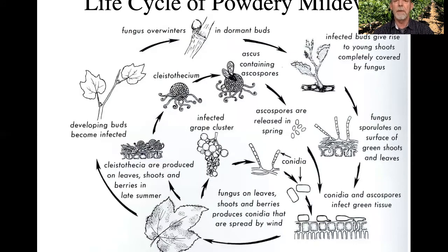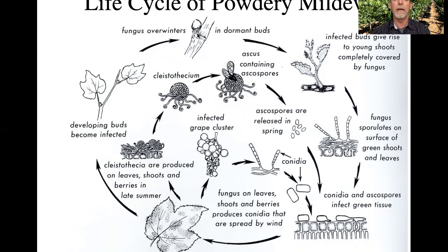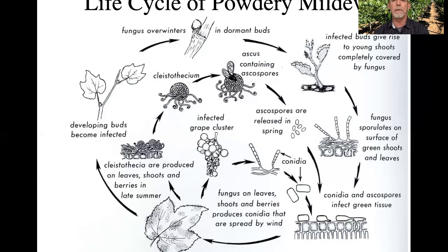Let's review the life cycle of powdery mildew, as it will give you more insight on the process of infection. At the end of the season, the sexual form of the fungus overwinters in the dormant buds of your vine, and also in the bark or cracks of the bark. At average day temperatures of 50 to 60 degrees, your buds will begin to break — which also happens to be the optimum temperature for growth of this fungus. The ascus spores will begin to germinate, and in about seven to ten days you would start to see white powdery spots on your leaf or fruit.